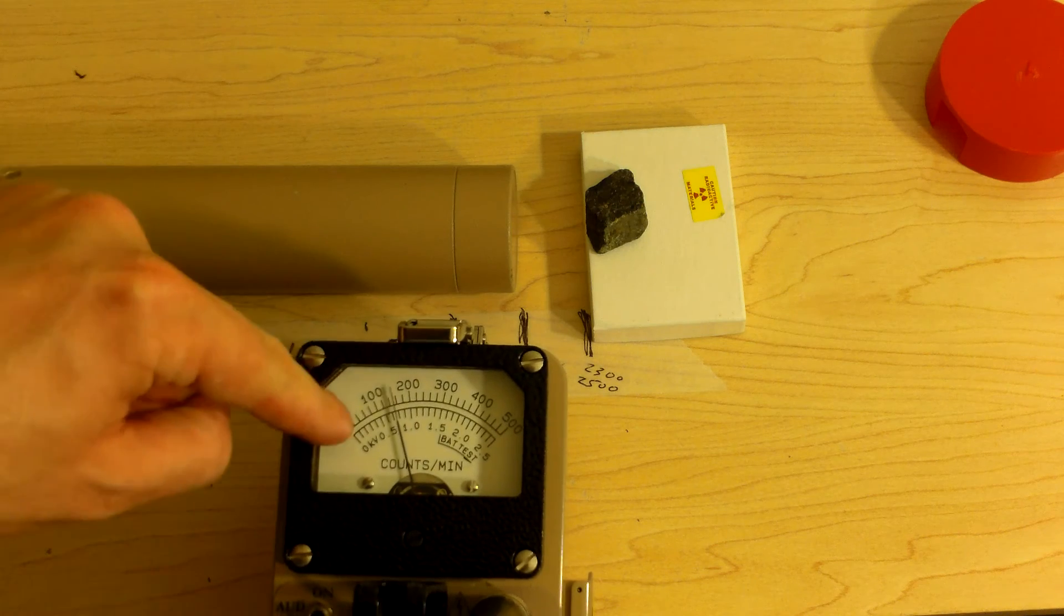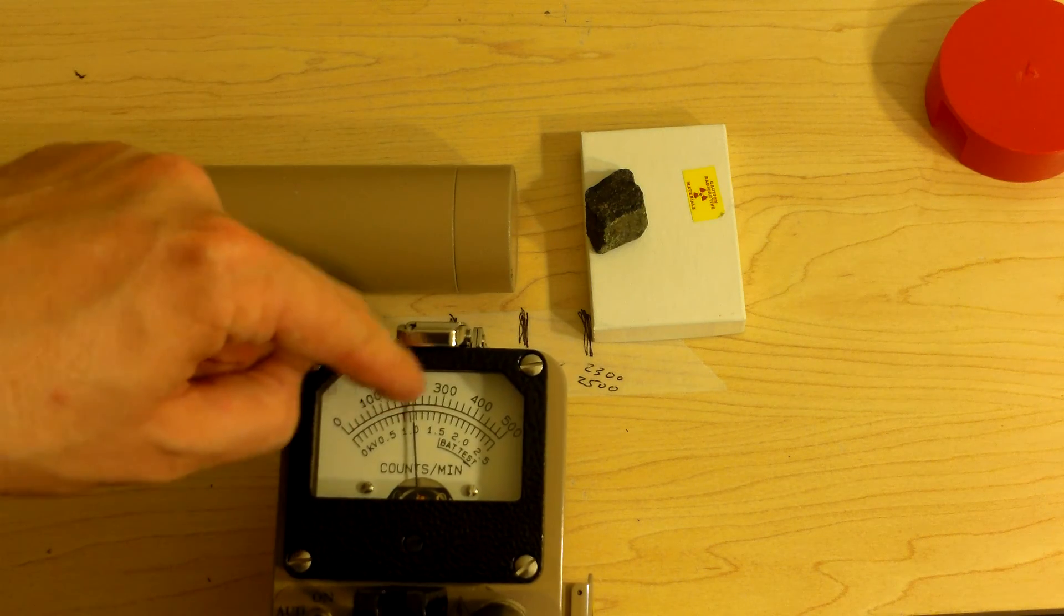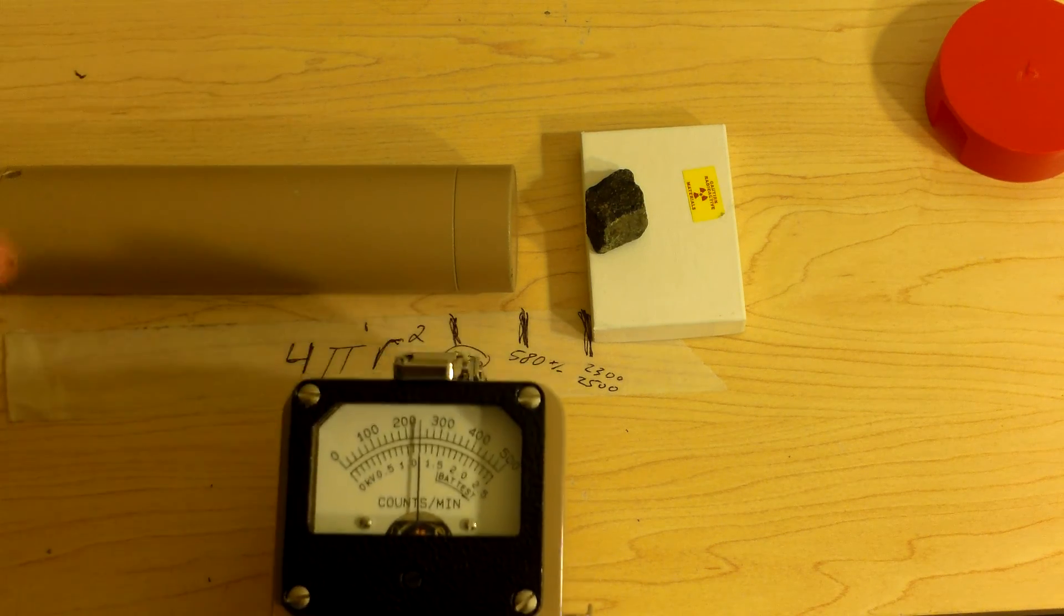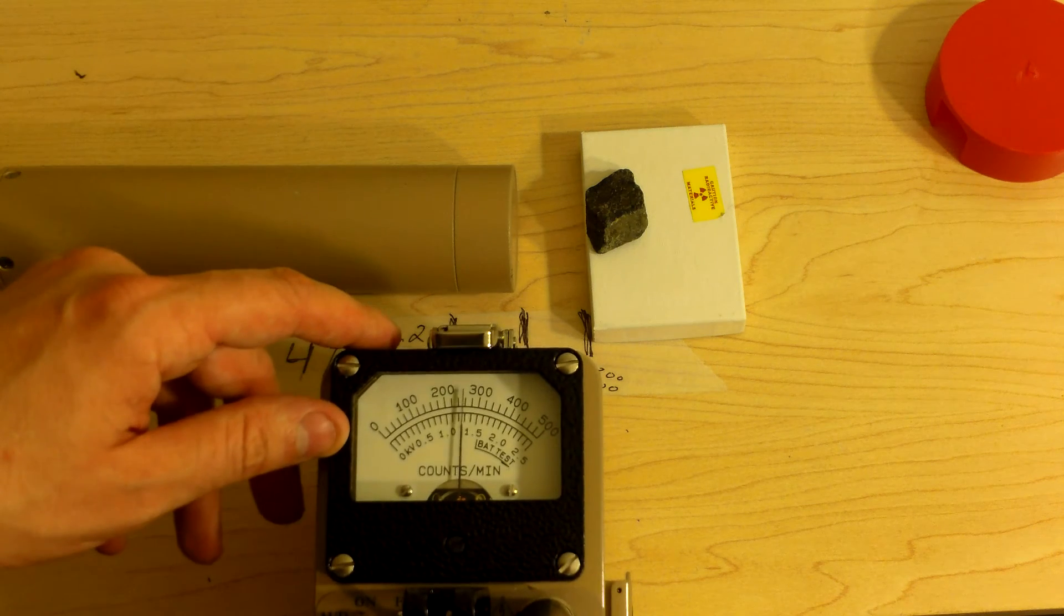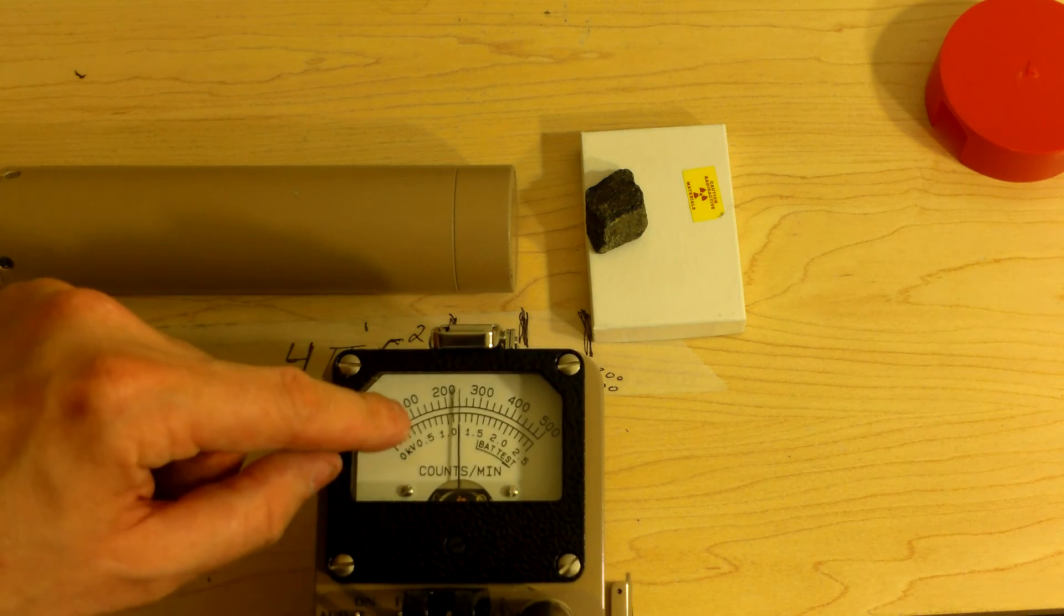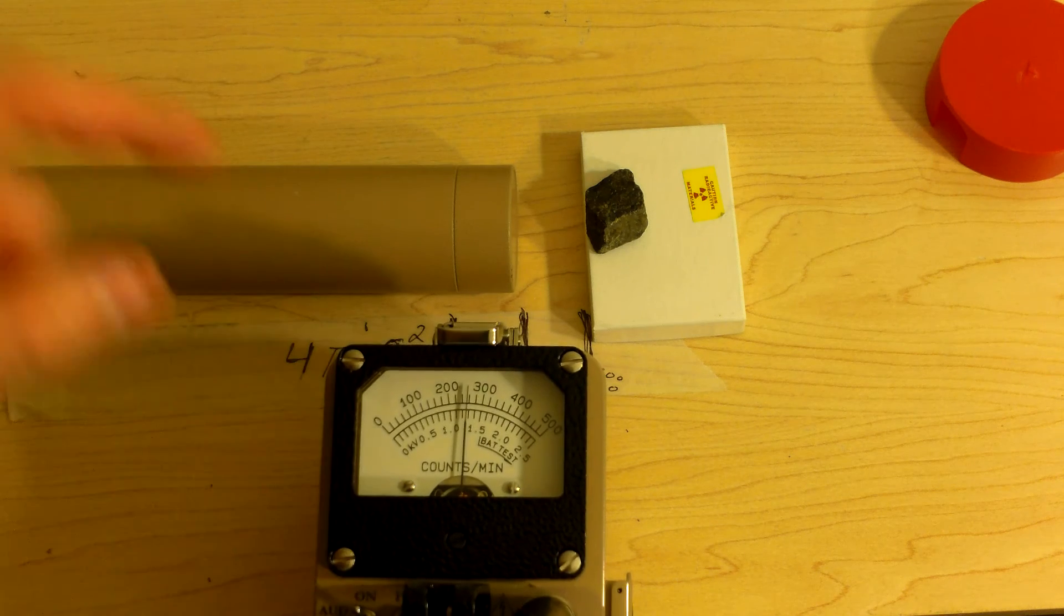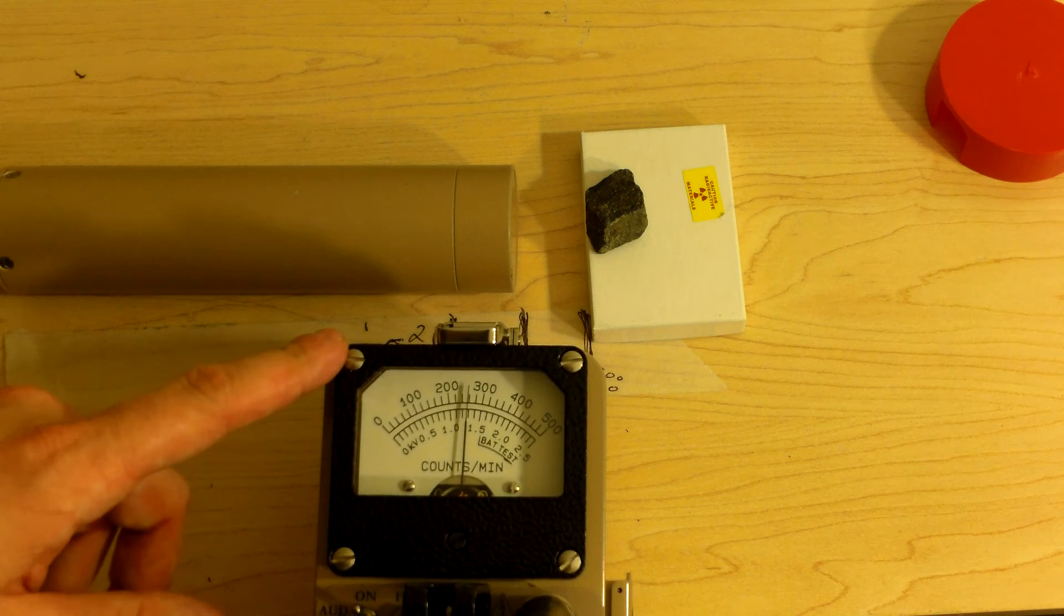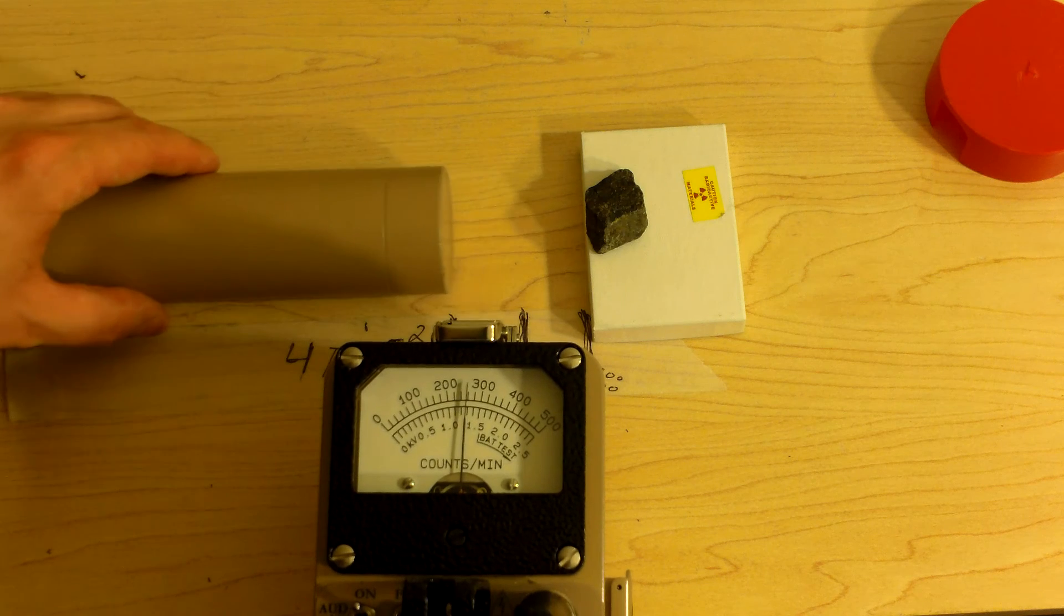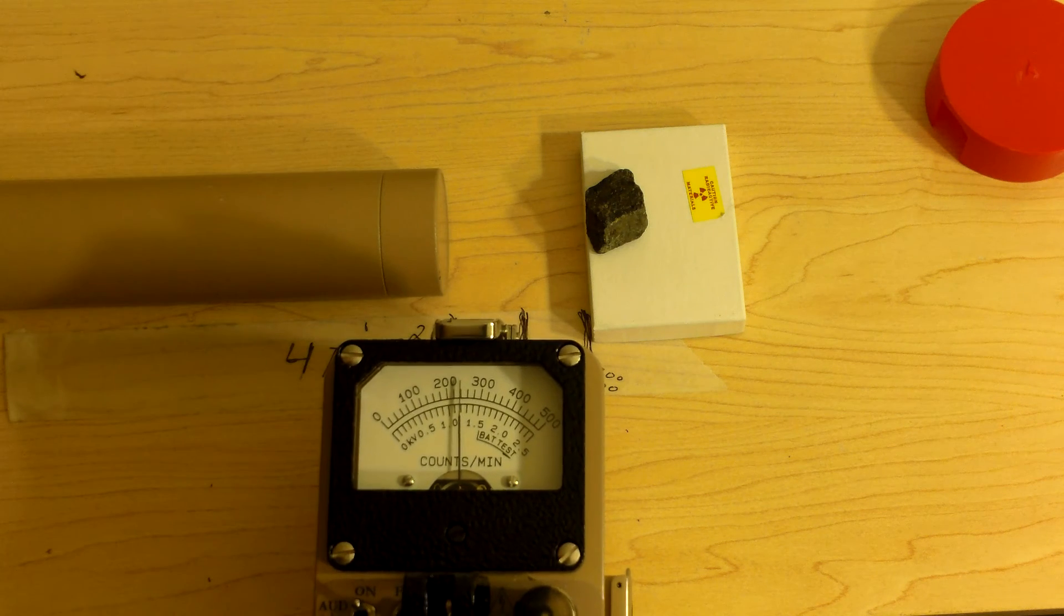Okay, so at one inch, we are now at 24,000 counts per minute. Slow it down a little bit. Move back another inch. Look at it fall. Put my finger over the sounder. Let's switch it back to fast response. There we go, fast response.